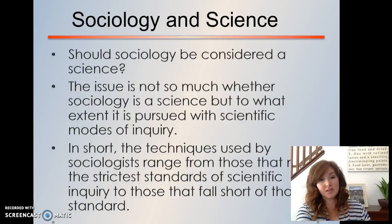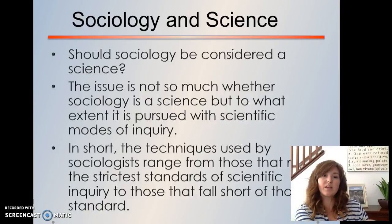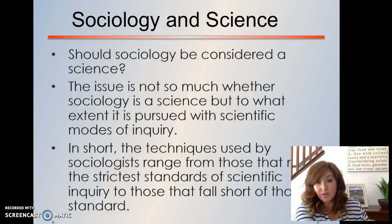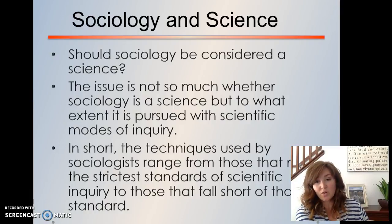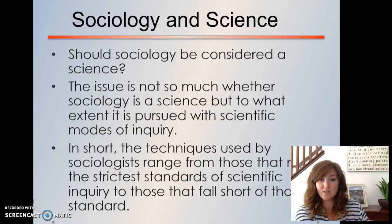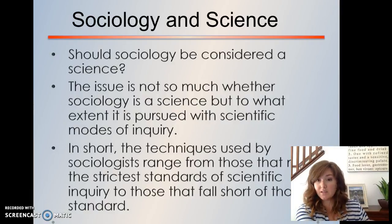So sociology should be science, because it's not so much about whether it is or is not a science, but to the extent that it is pursued with scientific modes of inquiry. The techniques used by sociologists range from those that meet the strictest standards to those that fall short. Just like any other hard science, when we are doing research, if we are not following strict standards and codes, then we are not going to be able to produce strong research and strong findings.